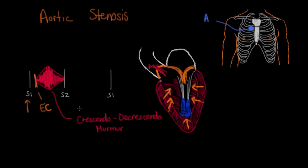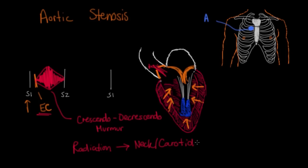Aortic stenosis is called a systolic ejection murmur — that makes sense because you're ejecting blood out of the aorta — and it can often have an ejection click, and it's usually heard most loudly at the aortic area. Commonly, this murmur can actually radiate to the neck or the carotids. The reason is that this murmur is occurring in the aorta, and some of the first branches off the aorta are actually the carotid arteries, so you can hear the murmur resonating up through the carotid arteries in the neck.